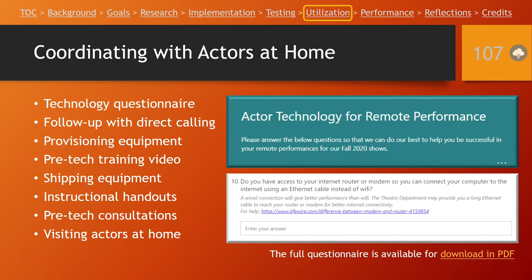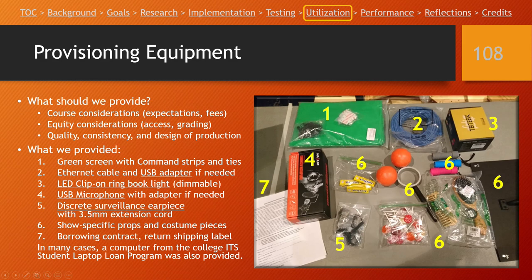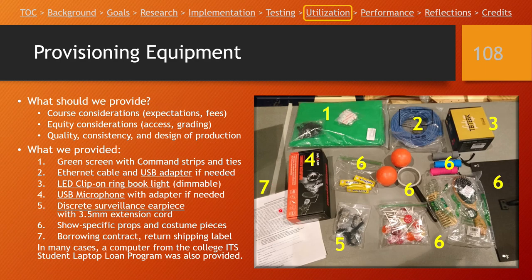Coordinating with actors at home is a huge challenge. We started with a questionnaire, asking all actors about the technology they had at home, and did some direct calling to communicate further. We had to provision equipment for our actors at home. Big items we sent included: a green screen so they could put a background behind themselves, an ethernet cable so they could plug directly into their internet router for the best connection possible, an LED light so we'd be able to see their face better, and an external microphone so we'd have more consistent sound from everyone.